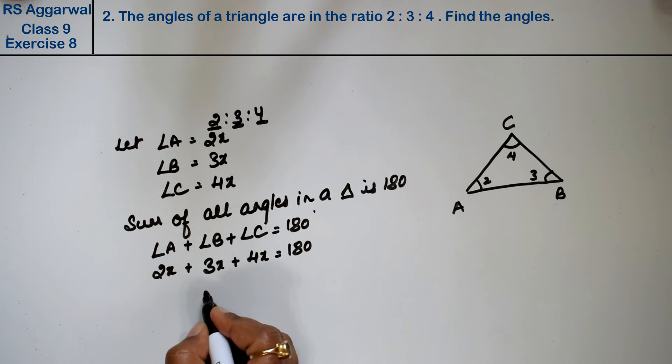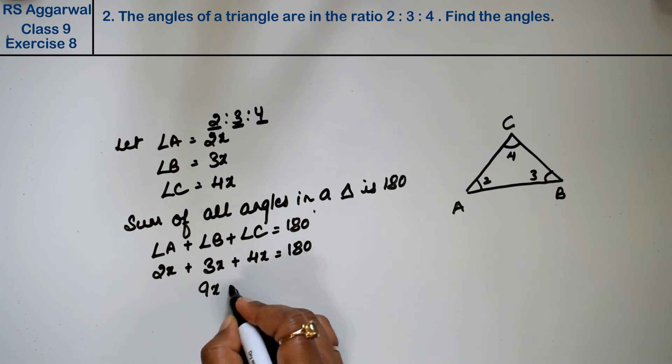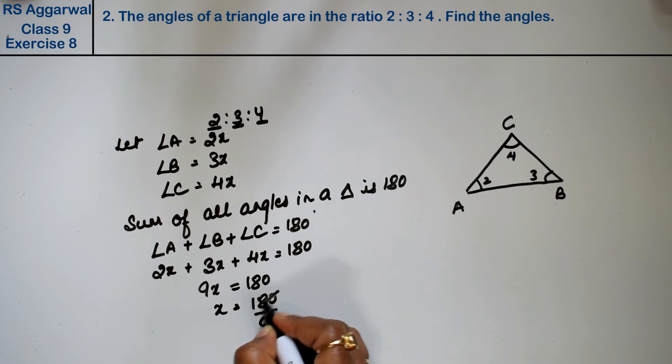This gives us 9x = 180. So x = 180 divided by 9, which equals 20 degrees.